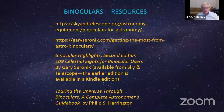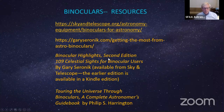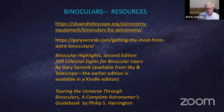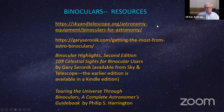Some binocular resources: Binocular Highlights, second edition, 109 celestial sites — available from Sky and Telescope for $25, or the first edition for Kindle for $10 on Amazon. Also recommended is Touring the Universe Through Binoculars, a longer, more complete book. There are also additional links provided for more information about binoculars.